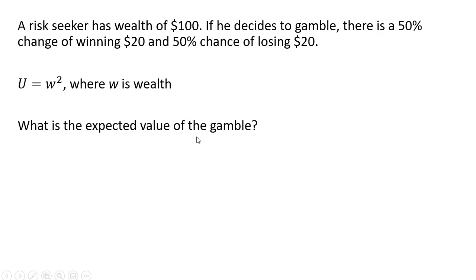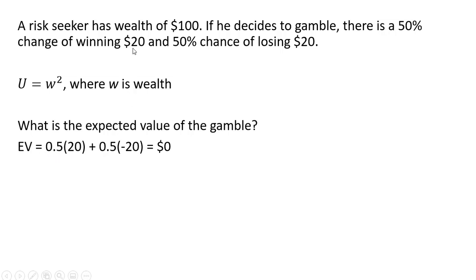What is the expected value of the gamble? The expected value of the gamble is going to be 0.5 times $20 if you win, plus 0.5 times negative $20 if you lose. So the expected value here is $0.